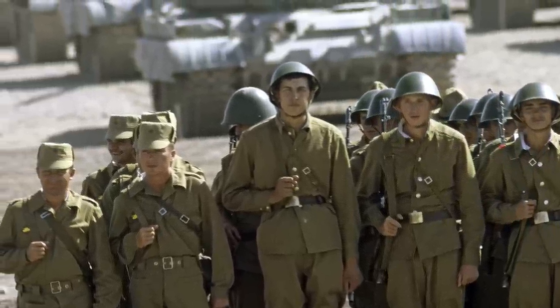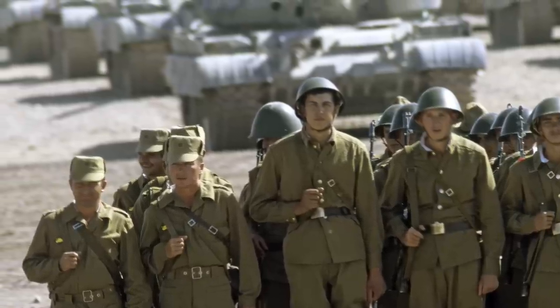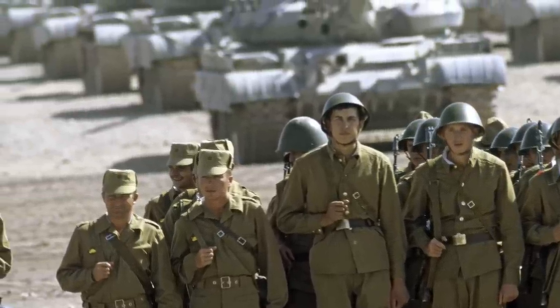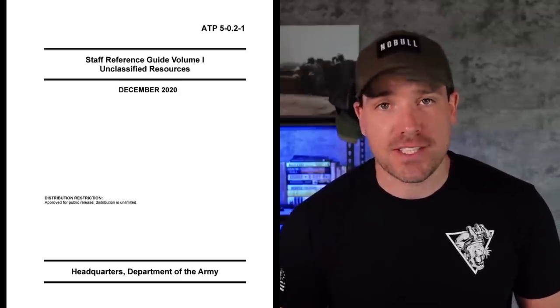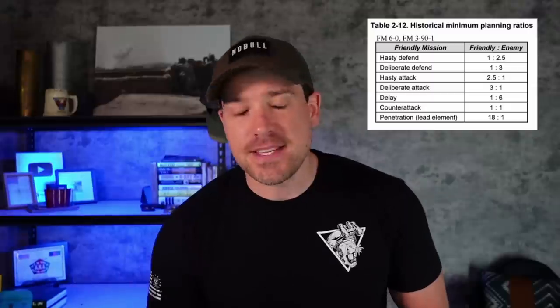Their doctrine stated that attackers needed a 5-to-1 ratio in personnel, 8-to-1 in artillery, and 3-to-1 in tanks. You can see how this gets really complicated when you factor in combat multipliers. The U.S. Army today references the 3-to-1 ratio in ATP 5-0.2-1, the Staff Reference Guide, Volume 1. In that document, they say that based on historical examples, these ratios should be considered the minimum for planning guidance.